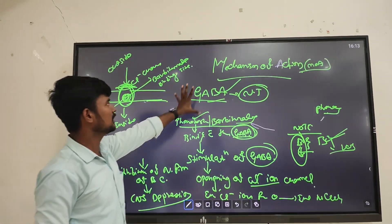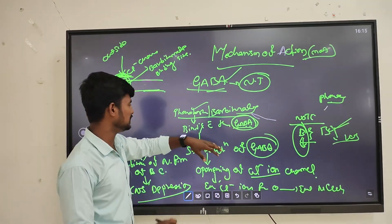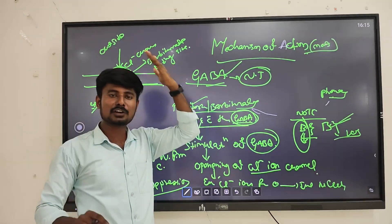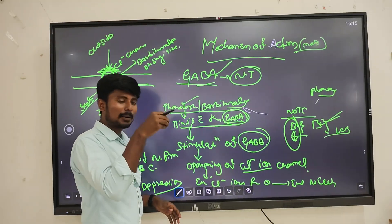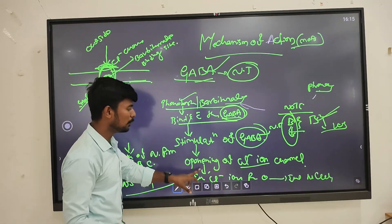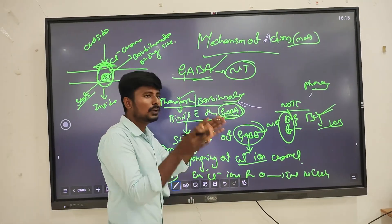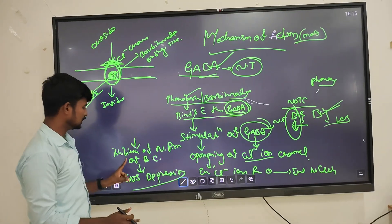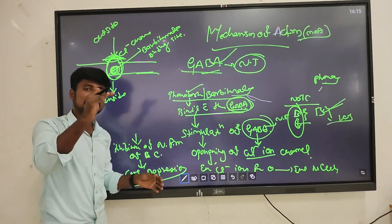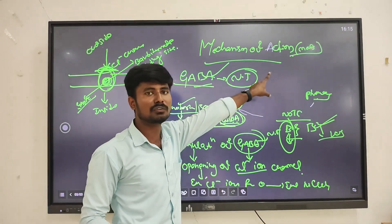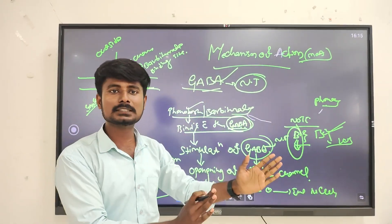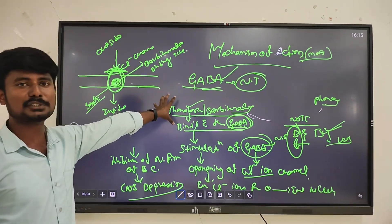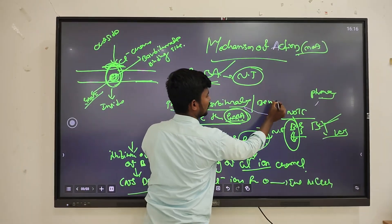Inhibition of neuronal firing of brain cells leads to CNS depression. This is the mechanism of action: once we introduce barbiturates via IV or IM injection, they go through the bloodstream, cross the blood-brain barrier, bind with the GABA receptor present in the neuronal cell membrane of the brain, stimulate the GABA receptor, open the chloride ion channel, cause entry of chloride ions from outside to inside, inhibit neuronal firing, and lead to CNS depression. This mechanism applies to both benzodiazepines and barbiturates.